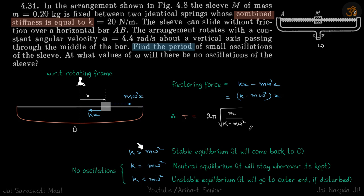So these are the three conditions. For stable equilibrium, when the object is at the axis, the equilibrium is stable. If you disturb the block in any direction, it will try to come back to the center. Stable equilibrium occurs when k is greater than mω².